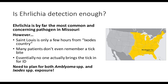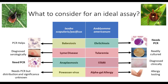Since we're using this instrument for so many applications, it was very attractive when in July 2018 DiaSorin released ASRs for the detection of Ehrlichia. One of our early questions was: is Ehrlichia detection enough? It is by far the most common and concerning pathogen in Missouri. However, St. Louis is only a few hours from Ixodes country — and one could argue we are already in Ixodes country. Coupled with the fact that many patients don't remember a tick bite, and essentially no one brings in a tick for ID, we need to plan for both Amblyoma and Ixodes exposure.